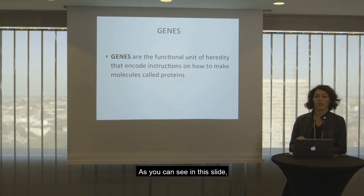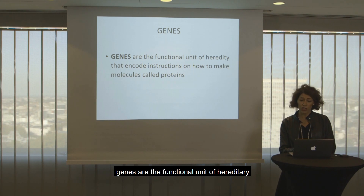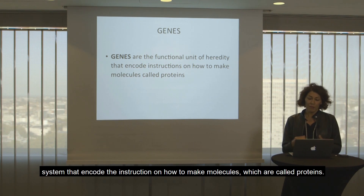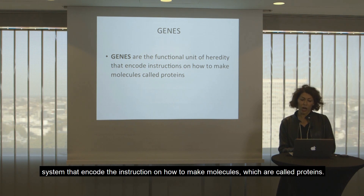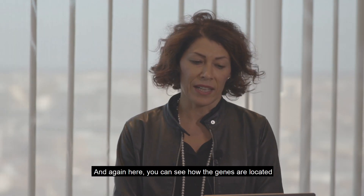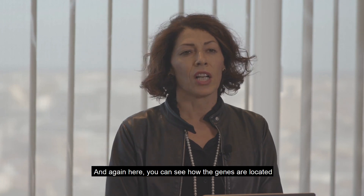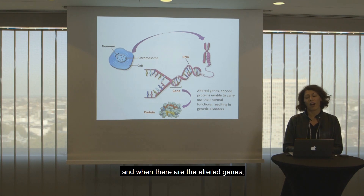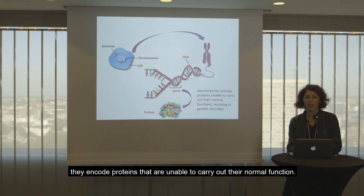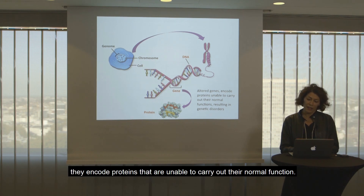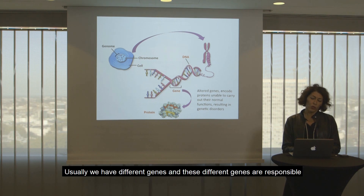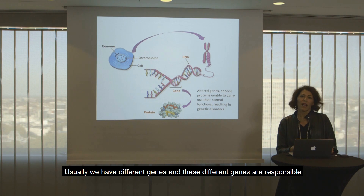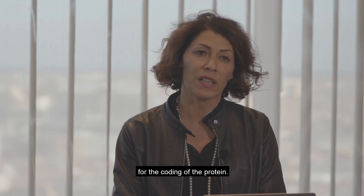As you can see in this slide, genes are the functional unit of the hereditary system that encode the instructions on how to make molecules, which are called proteins. You can see how genes are located on the chromosome in the nucleus of the cells. When there are altered genes, they could encode proteins that are unable to carry their normal function. We have different genes, and these different genes are responsible for coding of the protein.